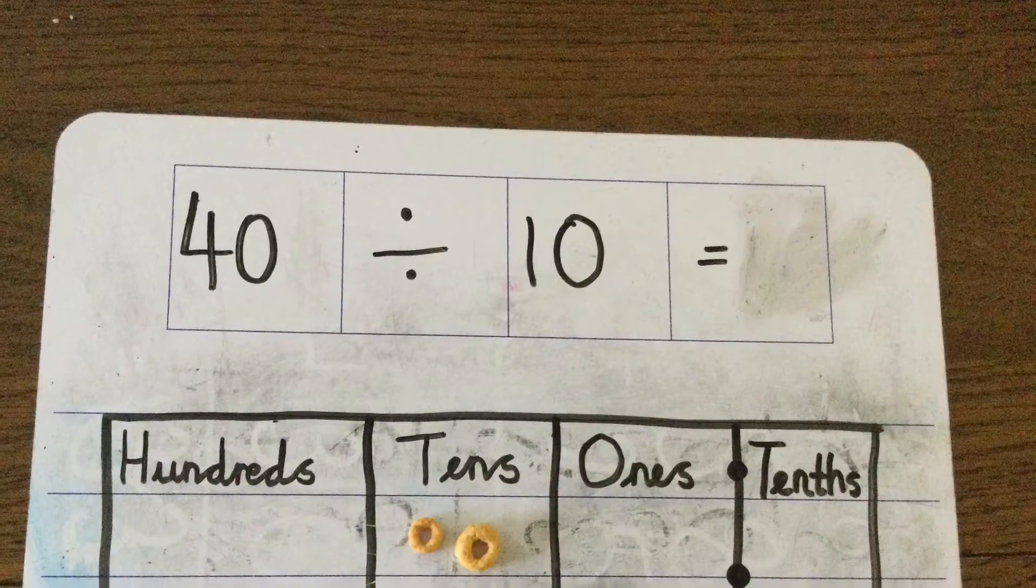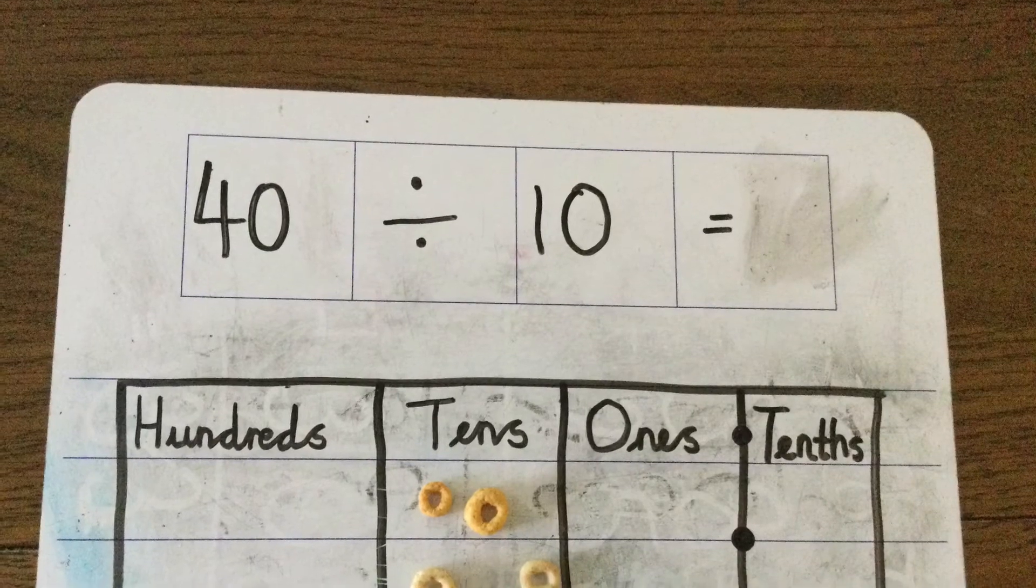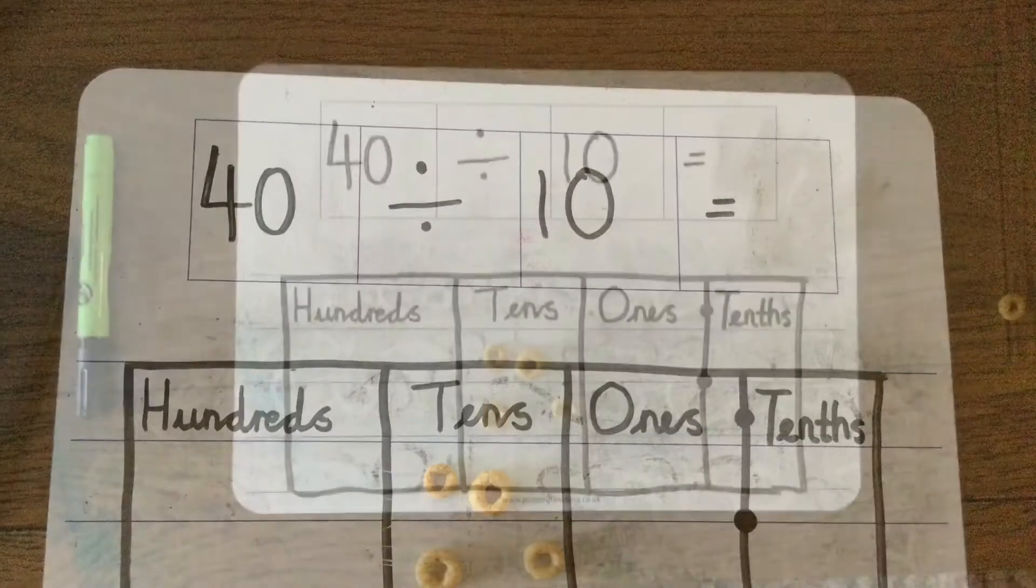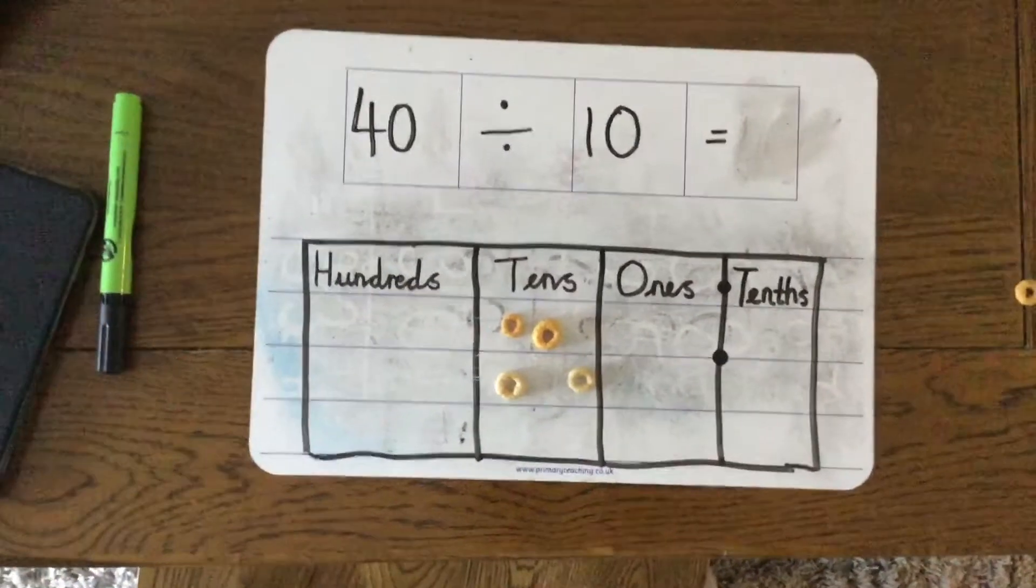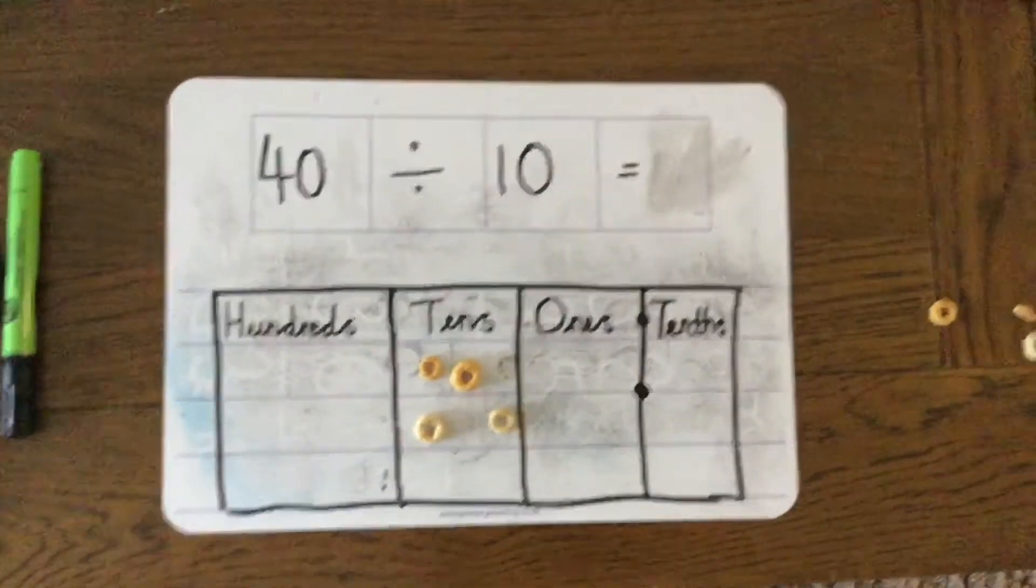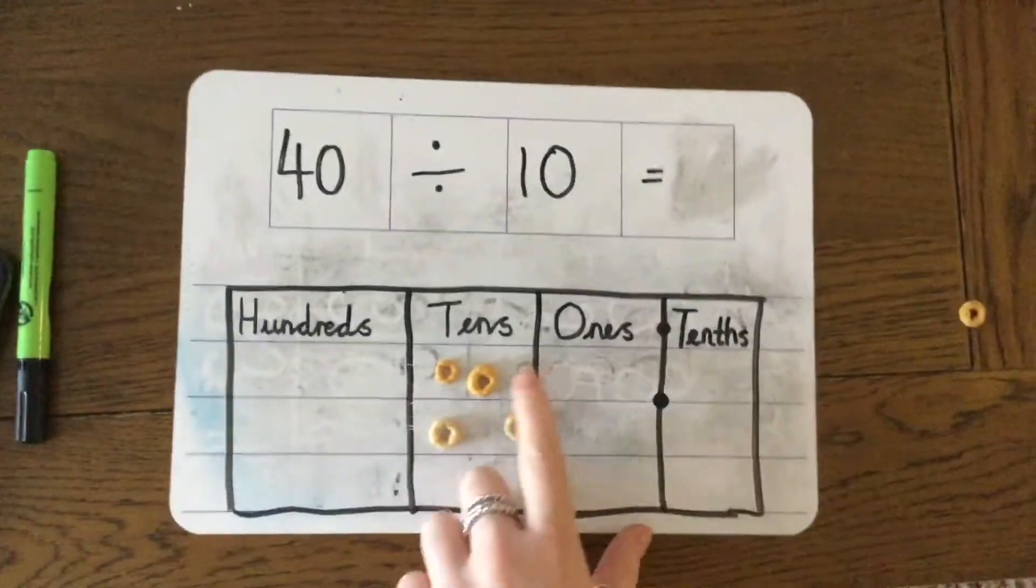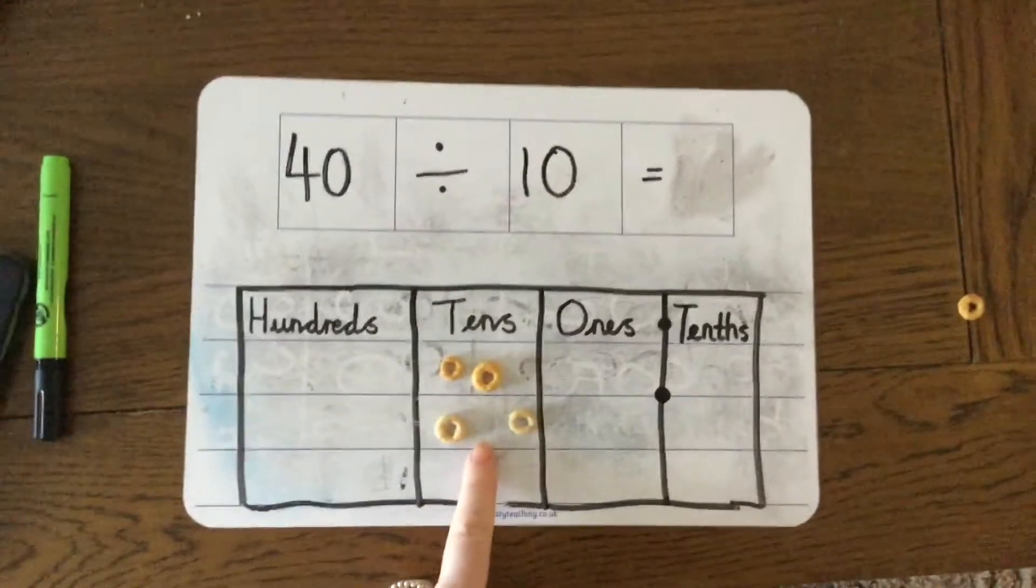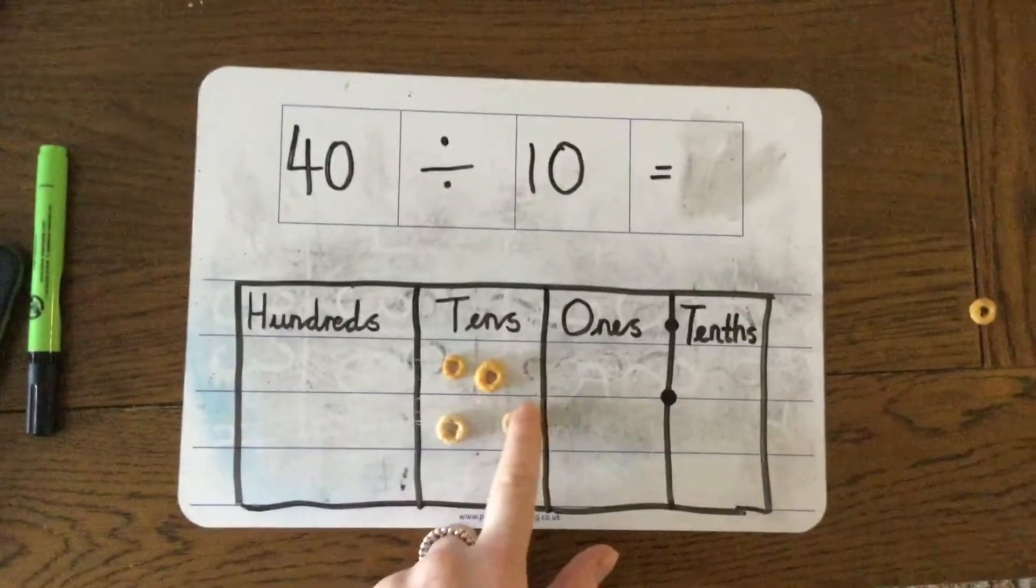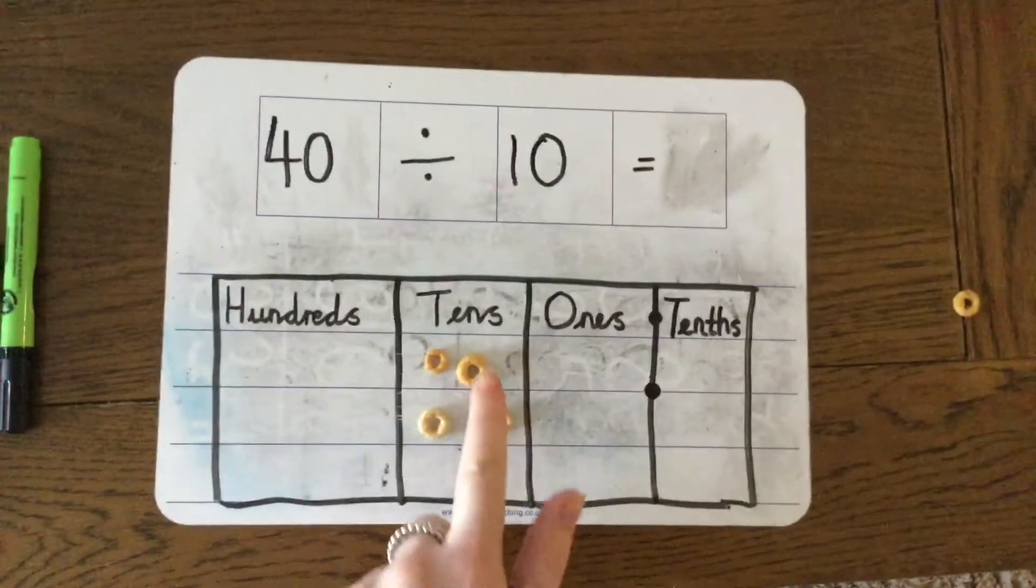Now we're going to focus on 40 divided by 10. I'm sure all your children at home will be able to tell you that the answer is 4, because they're fantastic at their 10 times table. But showing here on our place value chart, you can see that our value of our 4 is 40, because we're in our 10s column. 10, 20, 30, 40.